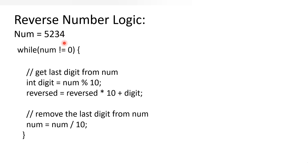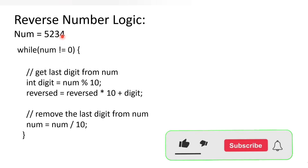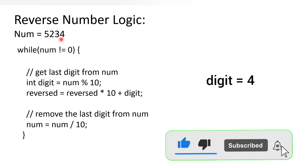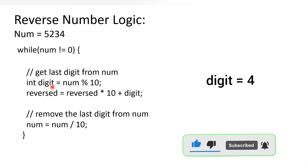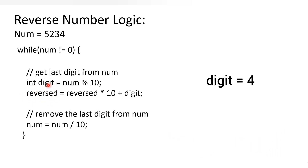To get the last digit, which is at the unit place, we need to use the modulus operator. If you say num modulus 10, you will get the remainder, which in this case will be 4. So the digit variable will have the value 4.